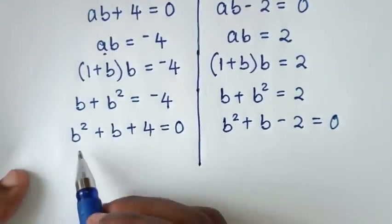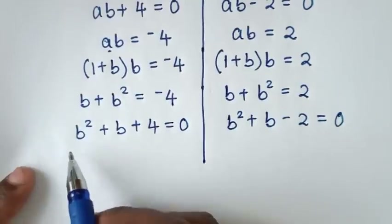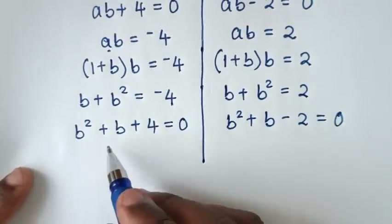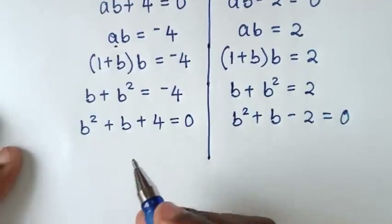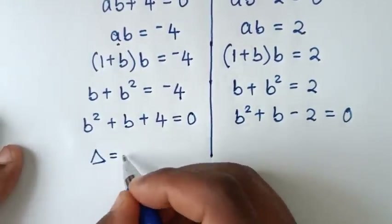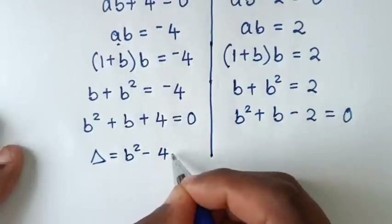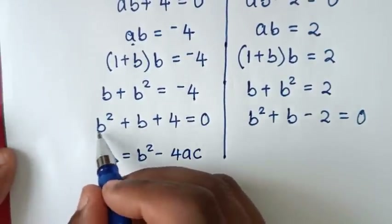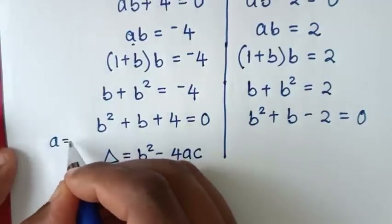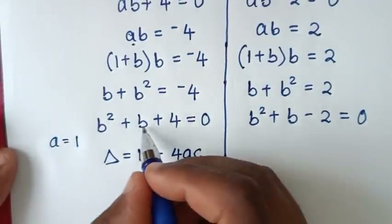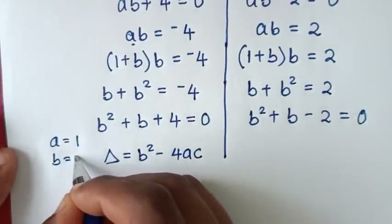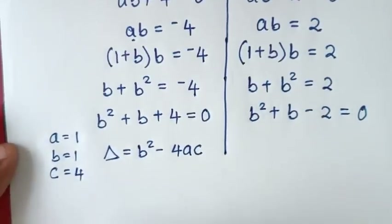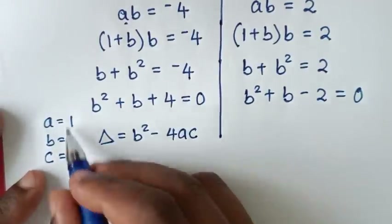Now from here, let's check if the first quadratic equation gives a real solution. To check, we use the discriminant formula: D = b² - 4ac. Here, the coefficient of b² gives a=1, the coefficient of b gives b=1, and the constant gives c=4. So let's substitute these values.